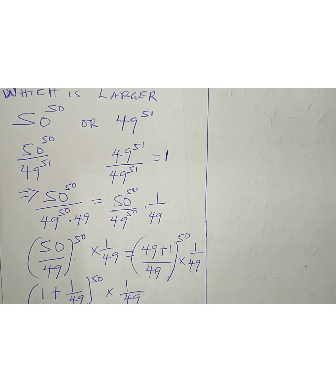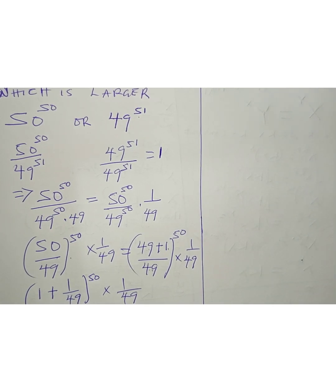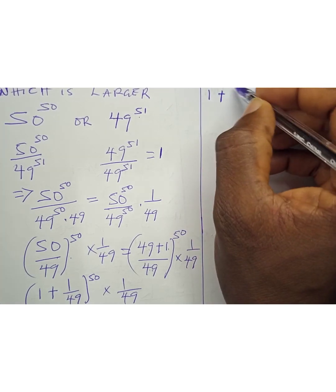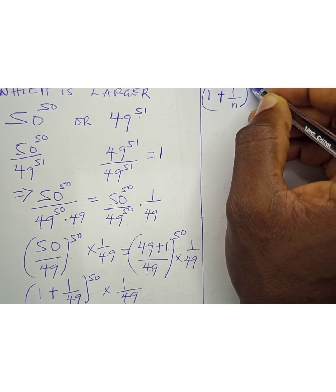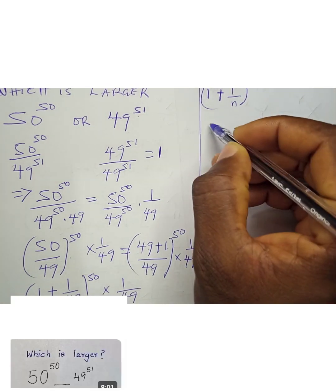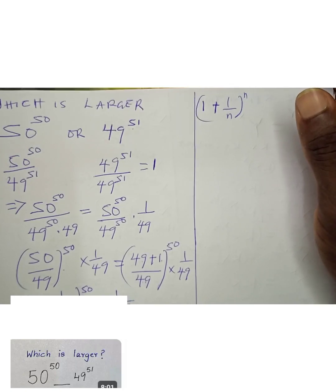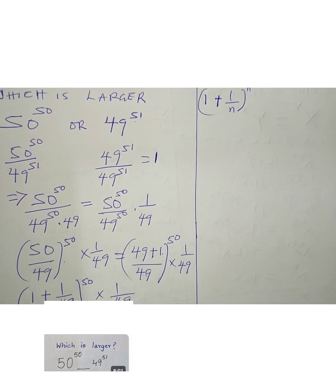Now the base and the exponent are complicated, and this looks like the form 1 plus 1 over n, raised to the power n. We can express it as (1 plus 1/n) to the power n.